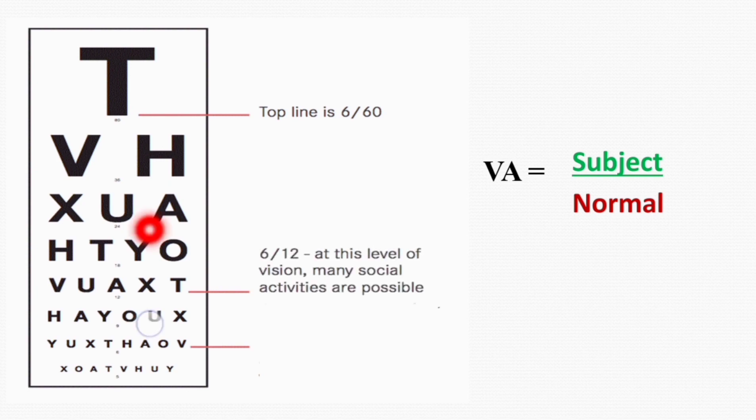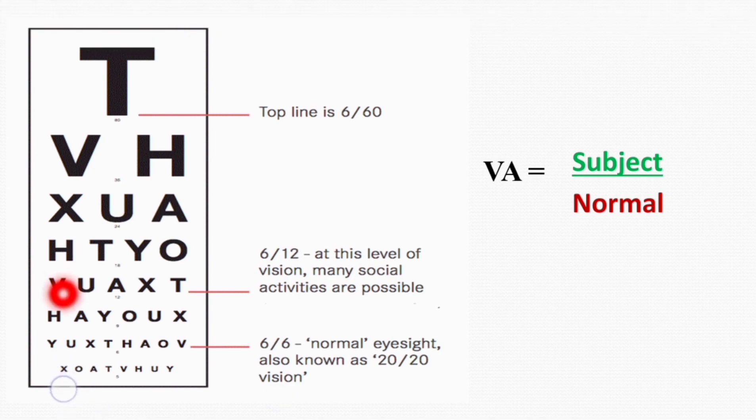Similarly, a subject who can read up to this line V U A X T, his visual acuity will be 6 by 12, and at this level of vision many social activities are possible. Please remember that the normal visual acuity is 6 by 6, and a person having 6 by 6 visual acuity must reach this second last line Y U X T H A O V. So if a subject can read this line, then his visual acuity is 6 by 6, or quite normal.